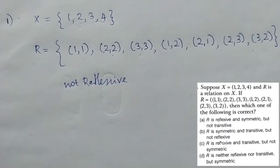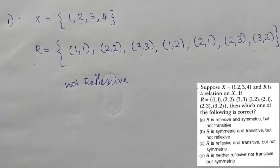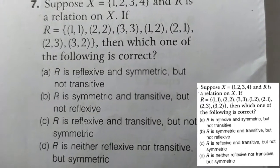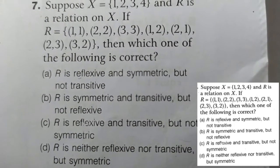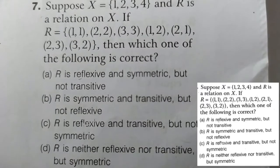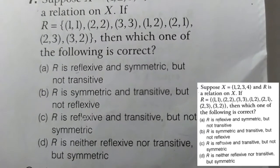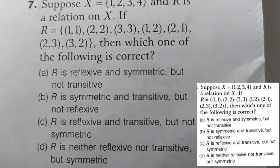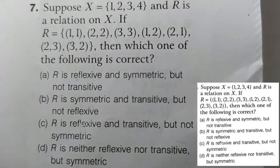Then we have two options. What is option A? What is reflexive in this option? What is option B — not reflexive? What is option D? It is neither reflexive nor transitive. Reflexive is not transitive. Then we have to check that.